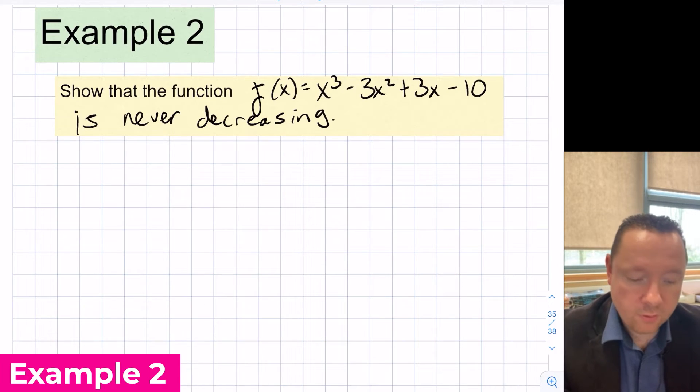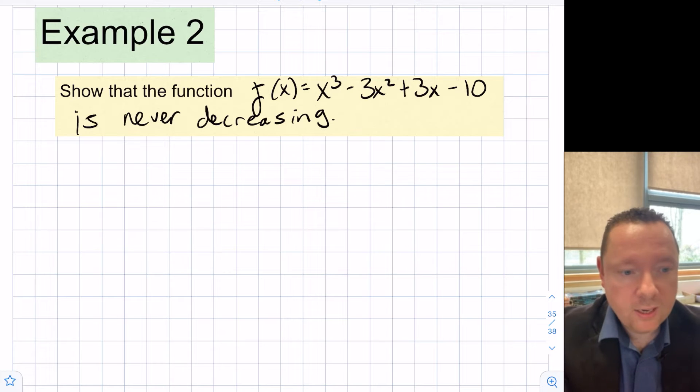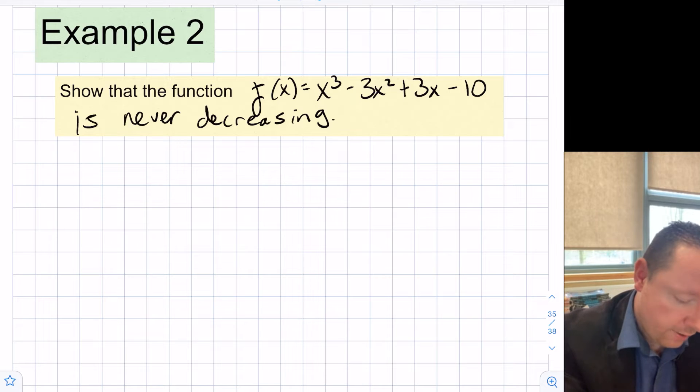Example 2 says show that the function f of x equals x cubed minus 3x squared plus 3x minus 10 is never decreasing. This is quite a common question. We need to be very careful with this one. Let's start off by differentiating it and see what happens.